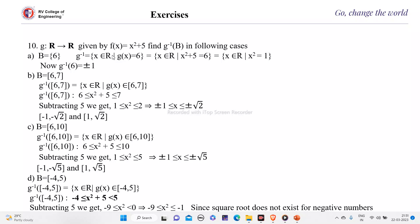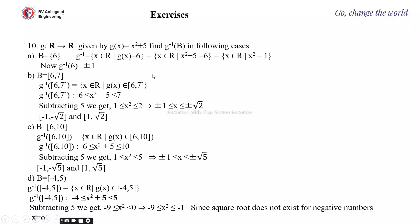So g⁻¹({6}) equals the set of x belonging to ℝ such that g(x) = 6. Since g(x) = x² + 5, we have x² + 5 = 6, so x² = 1, which gives x = ±1. Therefore g⁻¹({6}) = {+1, -1}.